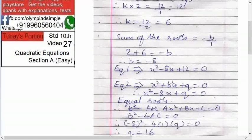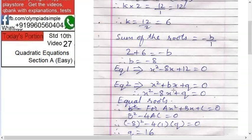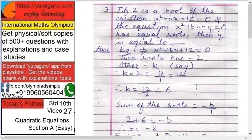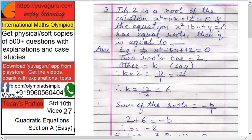But b you have got it already, so x square minus 8x plus q equals to 0. And what is given? The roots are equal. Now roots are equal means what?